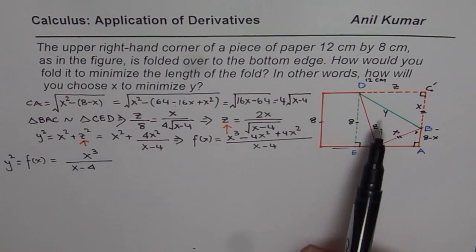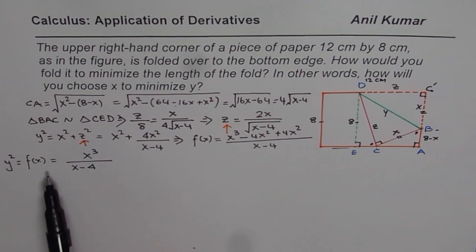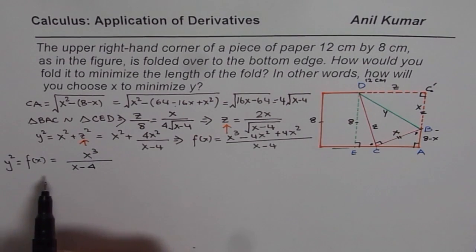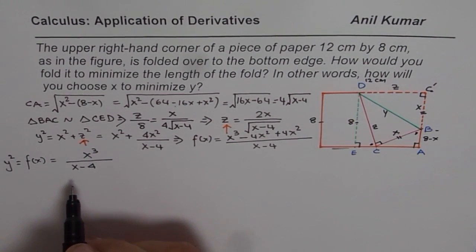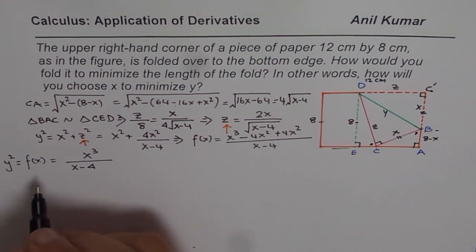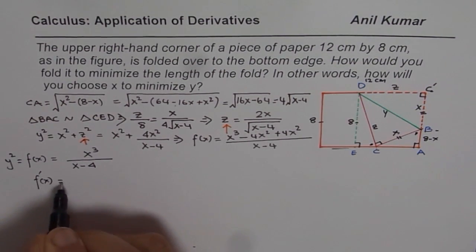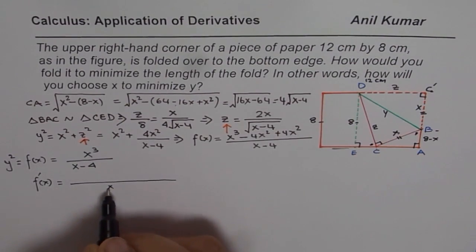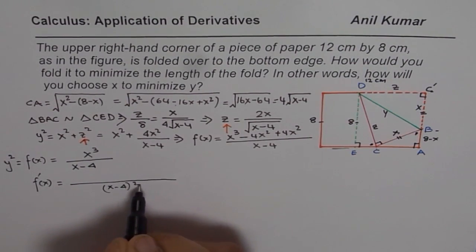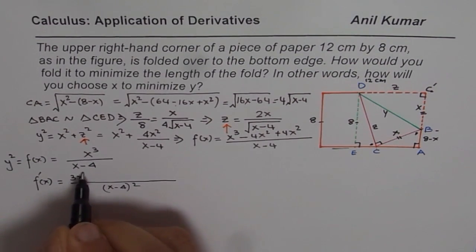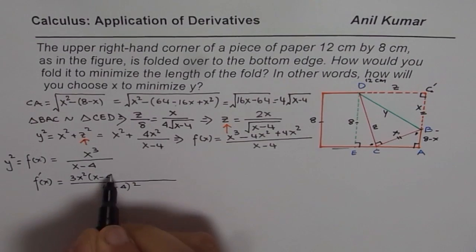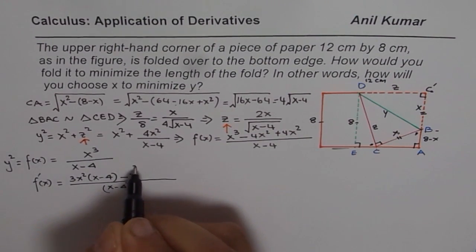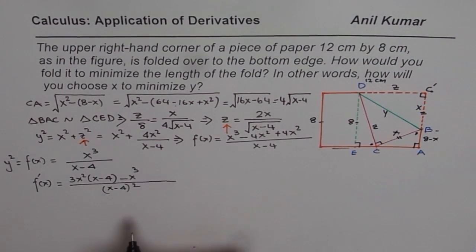Now, to minimize, let us find the derivative of this function and equate it to zero. To find the derivative, we will use the quotient rule. F'(X) equals, with denominator squared (X minus 4) squared: the derivative of X cubed is 3X squared times (X minus 4), minus X cubed times the derivative of (X minus 4), which is 1.